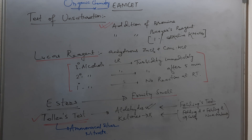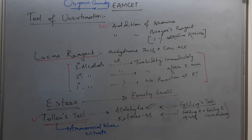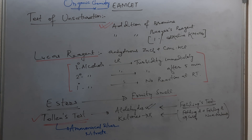Addition of bromine has been asked in 2020. Lucas reagent is anhydrous ZnCl2 plus concentrated HCl. Lucas reagent is used to distinguish between primary, secondary, and tertiary alcohols.